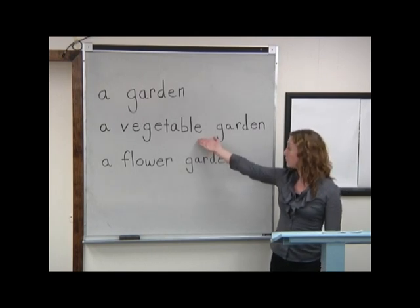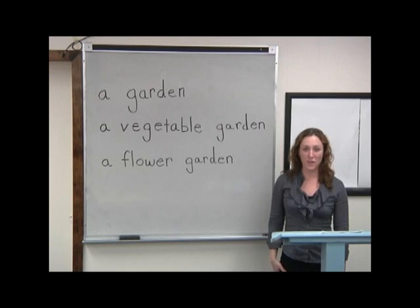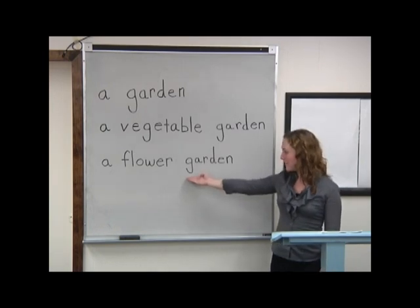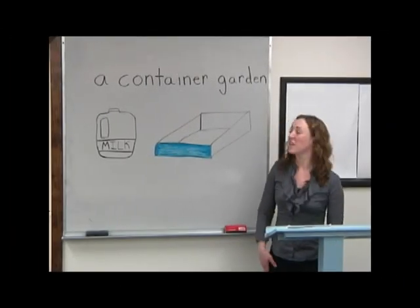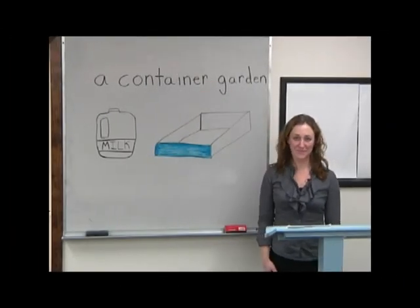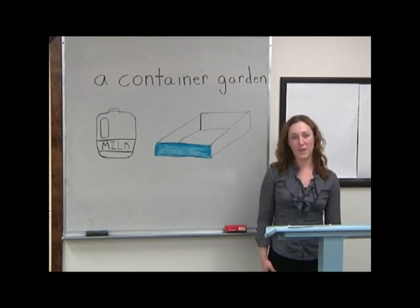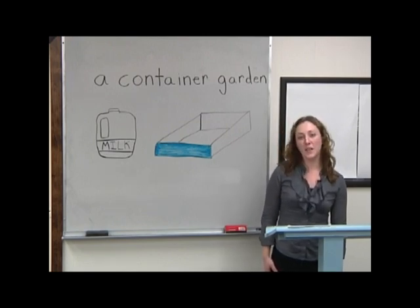A vegetable garden is a garden with vegetables. A flower garden is a garden with flowers. A container garden — you can plant a very small garden in a container. For example, maybe your container is